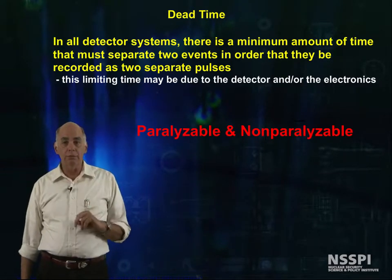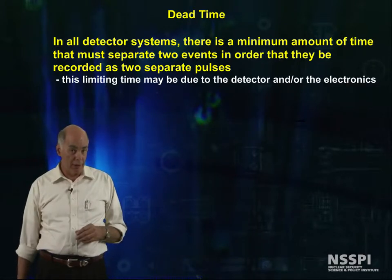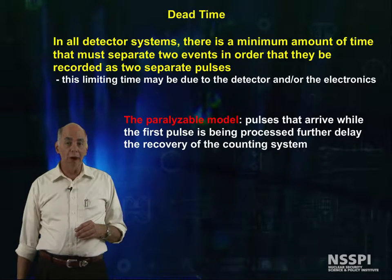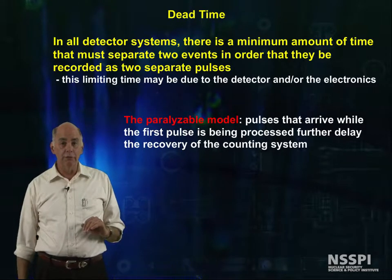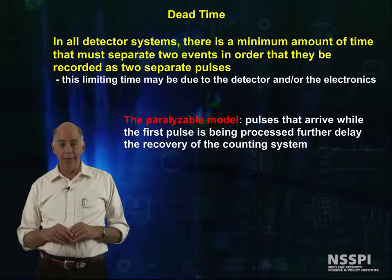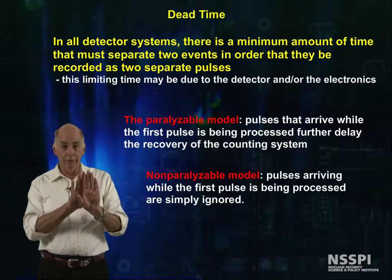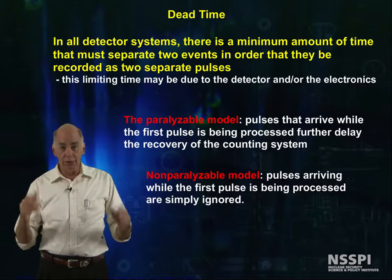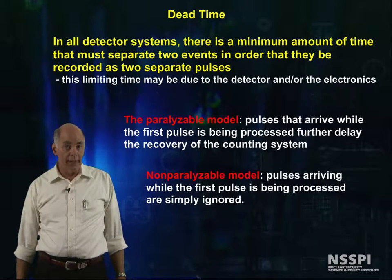There are two basic models for pulse counting systems: paralyzable and non-paralyzable. The paralyzable model's basis is that pulses arriving while the first pulse is being processed further delay the recovery of the counting system. The non-paralyzable model's basis is that pulses arriving while the first pulse is being processed are simply ignored. While this difference seems slight, the effects are large at high count rates.